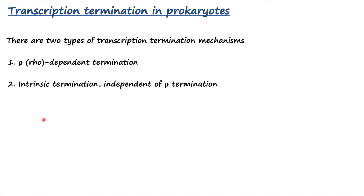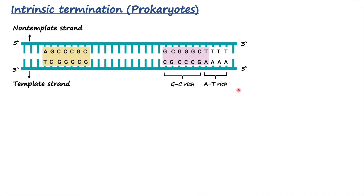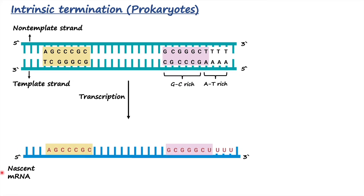Let's first talk about intrinsic termination in prokaryotes. Here we have a DNA double strand — the top strand is the non-template strand and the bottom strand is the template strand. There are two highlighted GC-rich regions as well as AT-rich regions. For termination to occur, this region must be transcribed into the newly synthesized mRNA strand, also called nascent mRNA. The adenine from the template DNA strand is transcribed into uracil, which is a ribonucleotide.